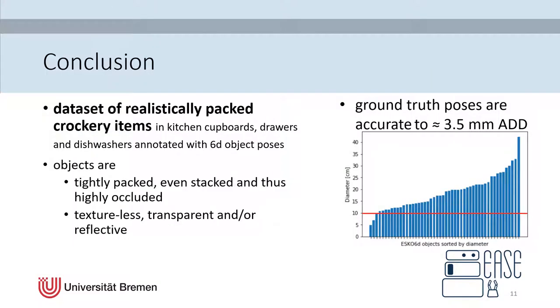To summarize, we provide a dataset of realistically packed crockery items in a common kitchen. Objects are tightly packed or even stacked and thus highly occluded. And all objects are texture-less and mostly transparent and or reflective. Our ground-truth data are not 100% correct. This is due to the tracking system what is used to generate them.